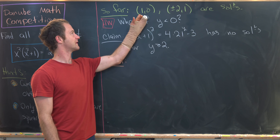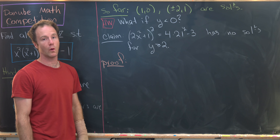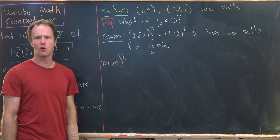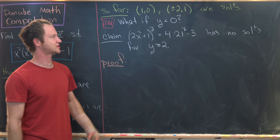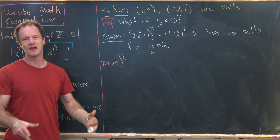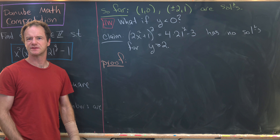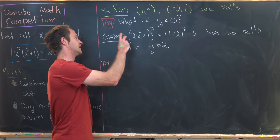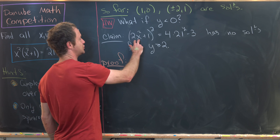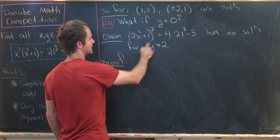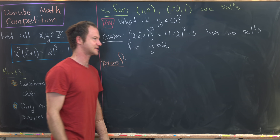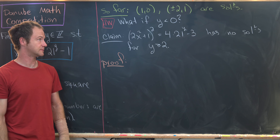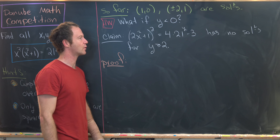So far we've shown that (0, 0) and (±2, 1) are solutions. As a homework exercise, consider what happens when y is less than zero — as a spoiler, there are no more solutions there. We now finish the problem by proving the claim: 2x squared plus 1, quantity squared, equals 4 times 21 to the y minus 3 has no solutions for y greater than or equal to 2.